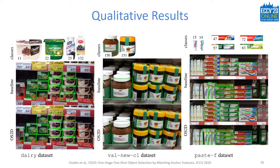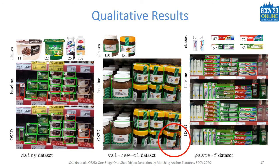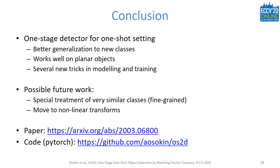Looking at qualitative results comparing the main baseline and our method: at the toothpaste example, the baseline struggles with localizing packages correctly since it never saw such packages at training, whereas our method does not have this problem. One failure case worth noting — since our method is based on patterns, it has no way to deal with 3D rotations; when a pattern moves and rotation gets large enough, the detection becomes incorrect. In conclusion, we proposed a one-stage detector for a one-shot setting where the key signal comes from matching learned local features, and the one-stage structure allows better generalization to new classes. For future work, we want to add treatment of very similar classes related to fine-grained recognition, and add non-linear transformations for non-rigid objects. Our paper and code are online.